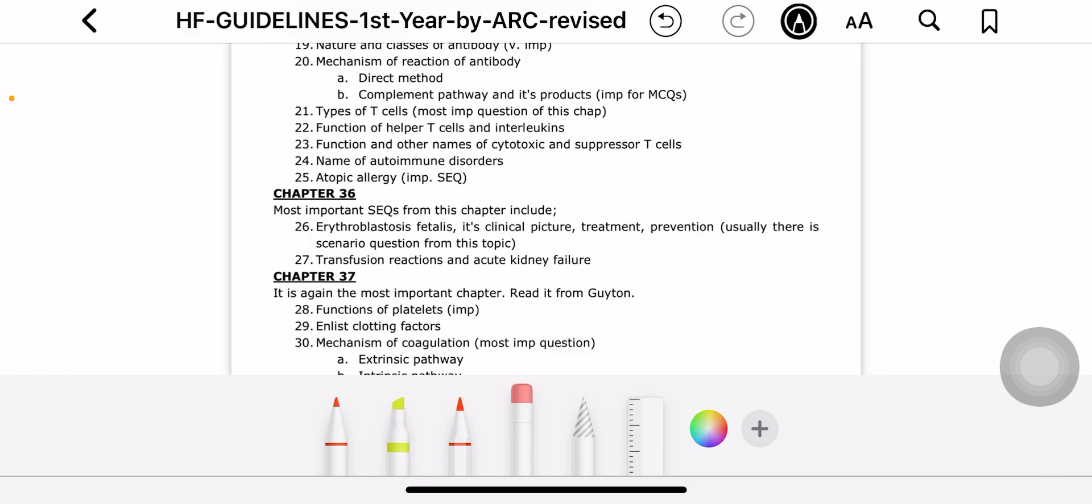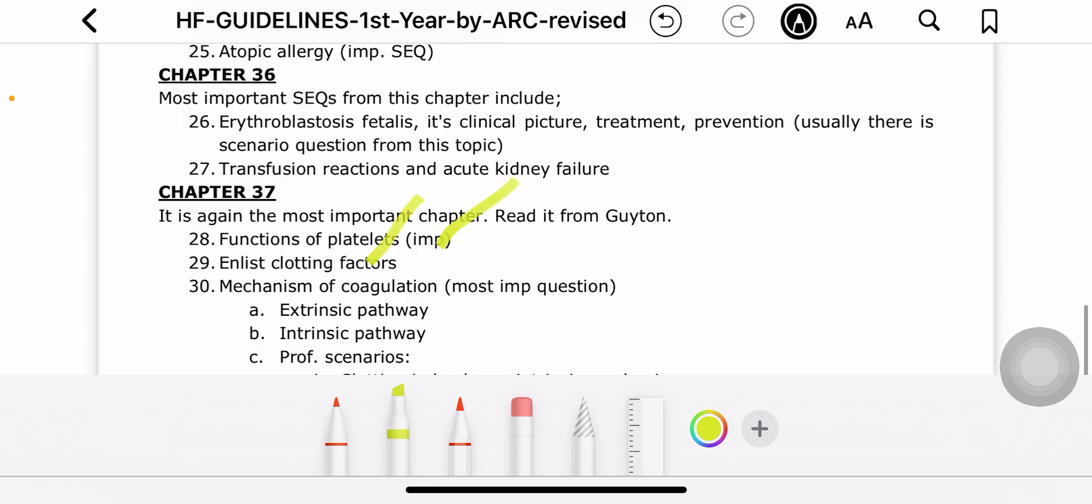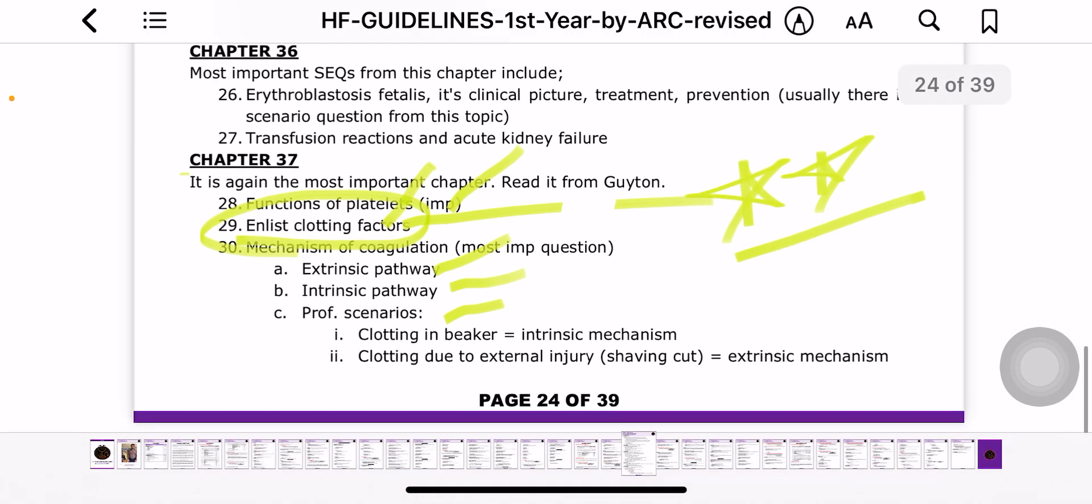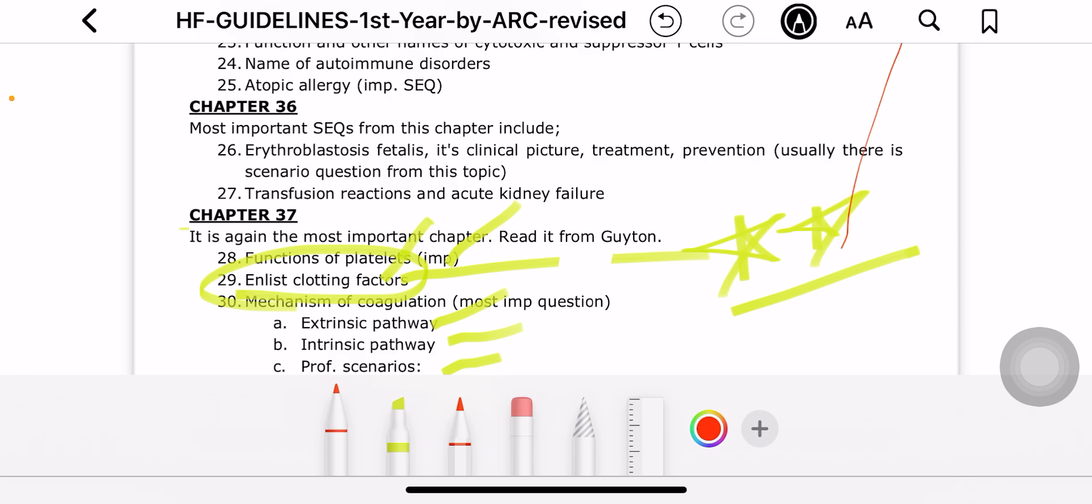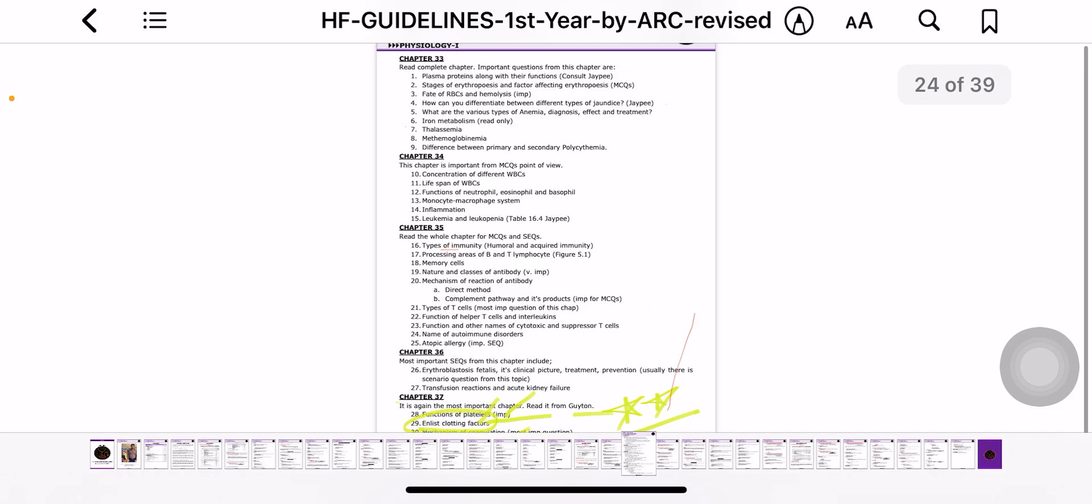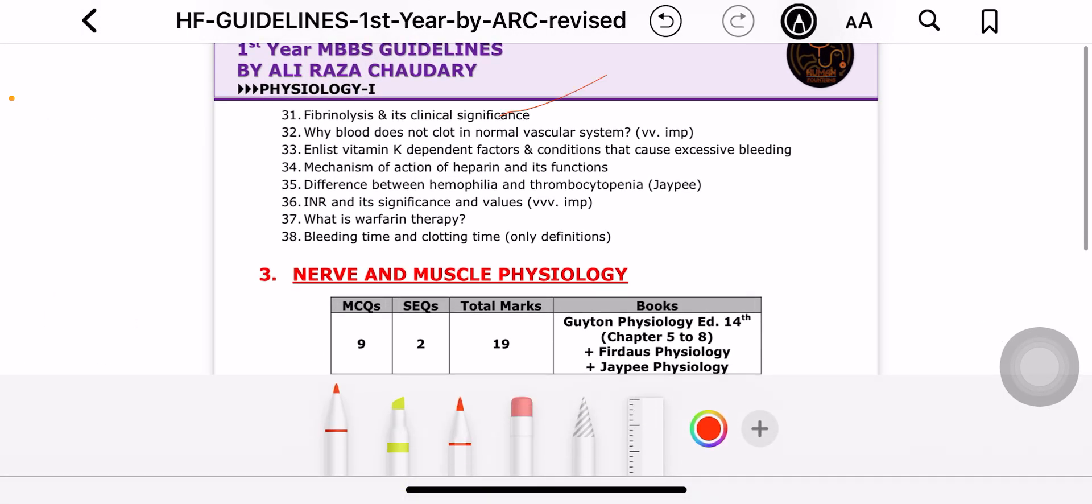So here we go, we have concluded our blood physiology. I will tell you which questions to discuss: functions of platelets, enlisting clotting factors - this question about clotting factors has a mnemonic, like 'Have a Fresh Party.' You can make anything. Mechanism of coagulation - intrinsic and extrinsic, I've told you scenarios come in these. Clotting in beaker means intrinsic factor; shaving cut means extrinsic factor - this is important. What is fibrinolysis? What is its significance? Why does blood not clot in a normal vascular system? You should know intravascular anticoagulants. Enlist vitamin K dependent factors. Hemophilia, thrombocytopenia, warfarin therapy, bleeding time, clotting time, mechanism of action of heparin - all these questions we have already discussed with you guys.